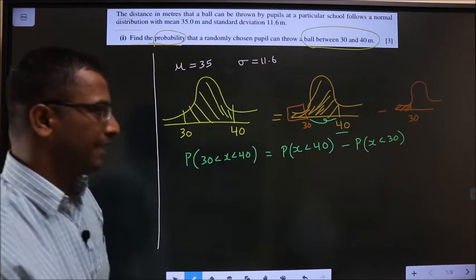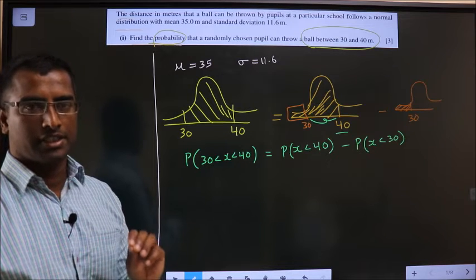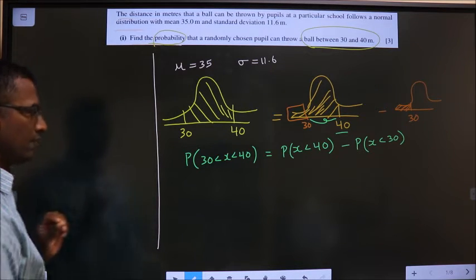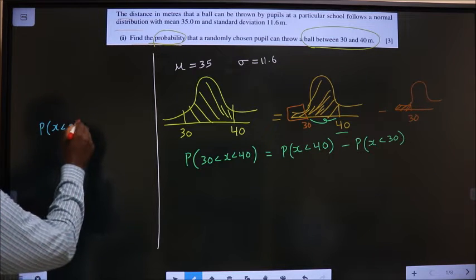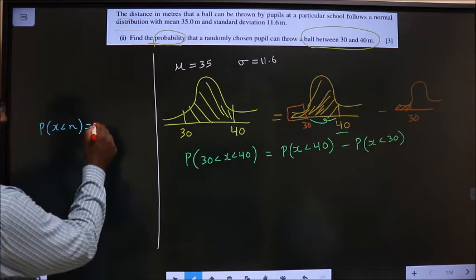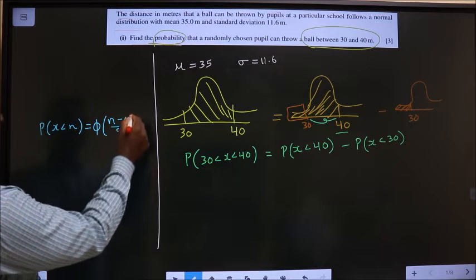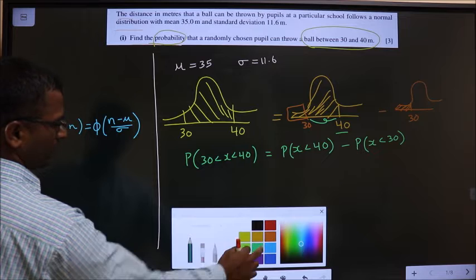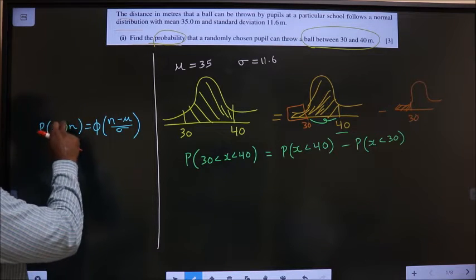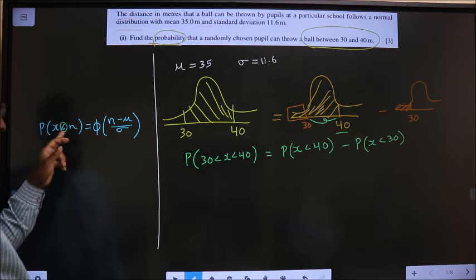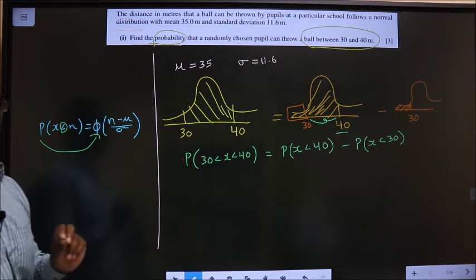Am I clear with this statement? Now, in any normal distribution question, we have to make use of this one. P of x less than n is nothing but phi of n minus mean by standard deviation. You have to check out for this inequality. If it is less than, only then this will get converted to phi.